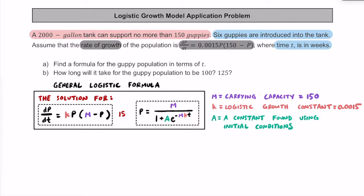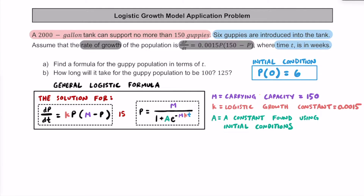The third variable that's important here is capital A. That's going to be the constant that we find using the initial conditions. The variable t represents time, measured in weeks. So our initial condition is p(0) = 6, meaning when we have 0 weeks we had 6 guppies in the tank. We can use that initial condition — when t is 0, p is equal to 6 — to find out the value of A.